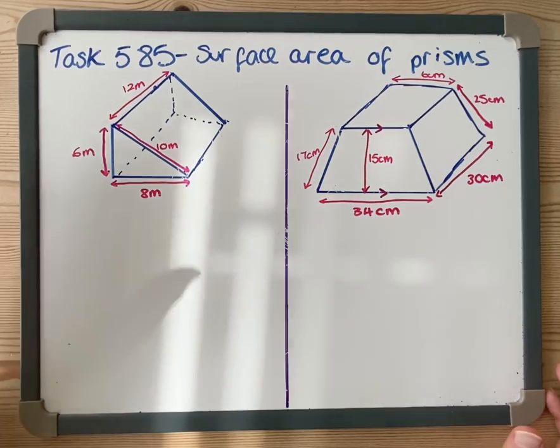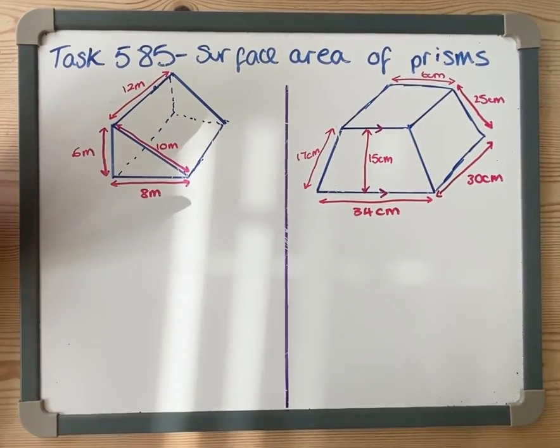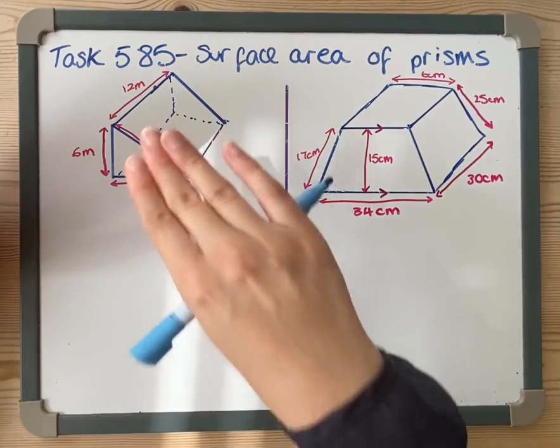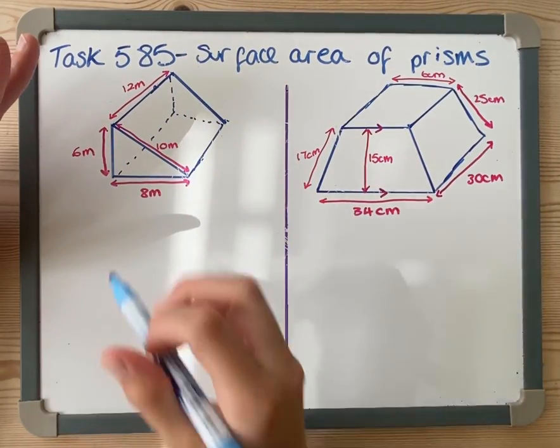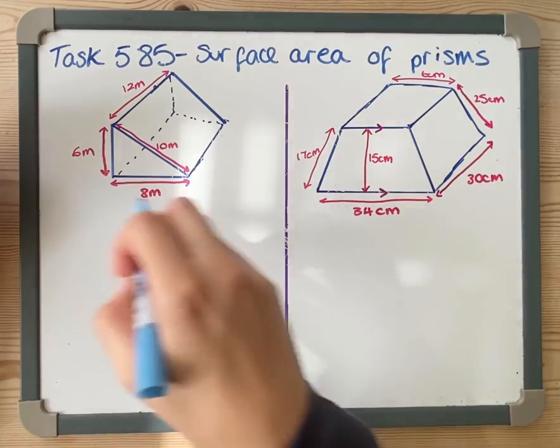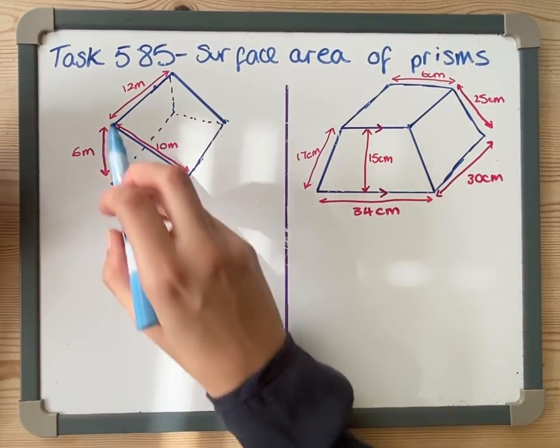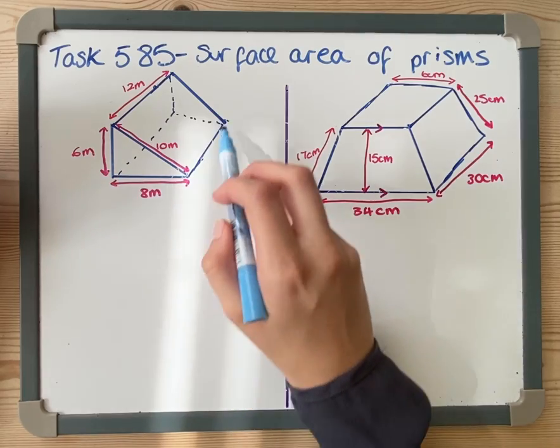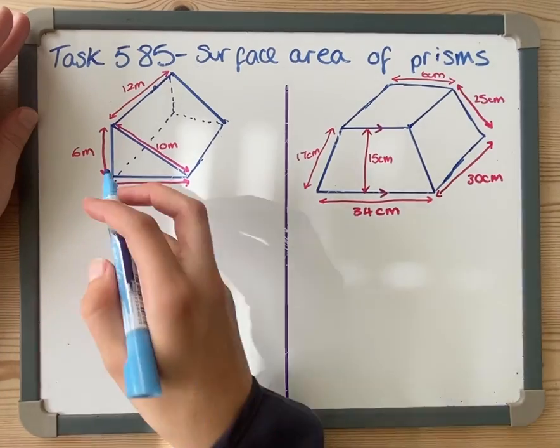That's really important to know when I'm working out the surface area. I'm working out the areas of every single surface, every single face, that this has. This shape has five faces: the two triangles and then this rectangle here, the rectangle at the bottom and the rectangle at the back. I'm going to work out what all those areas are and add them together to get the total surface area.